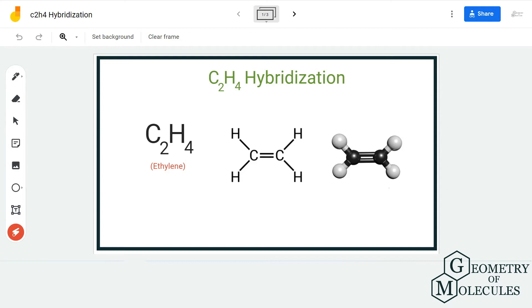Hi guys, welcome back to our channel. In today's video, we are going to help you determine the hybridization for C2H4 molecule. It is known as ethylene or ethene—both nomenclatures are accepted for this molecule.